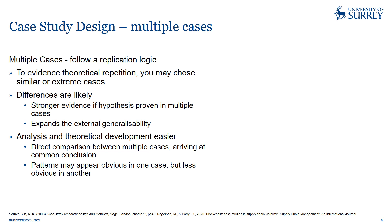Multiple cases is where you follow a replication logic — you're wanting to do multiple cases and show that the same thing perhaps happens. You may find theoretical repetition, or you may look for similar or extreme cases to show that something still holds, or maybe it breaks. Differences are likely between cases. The stronger evidence is if your hypothesis is proven in multiple cases — if the reason A goes to B is explained by a certain thing, and you show that happening across many different case studies.